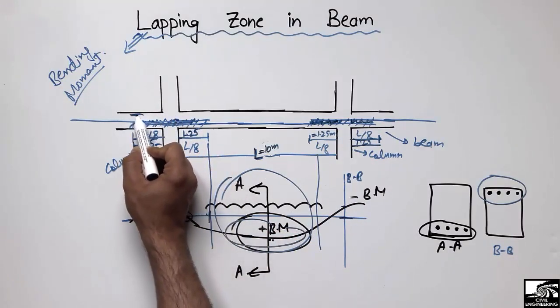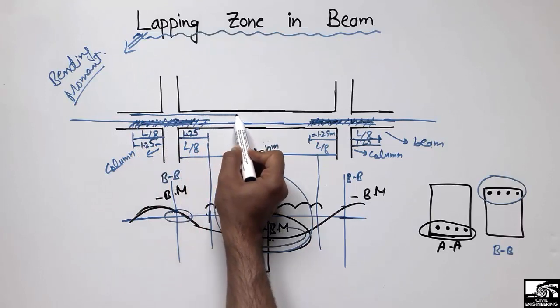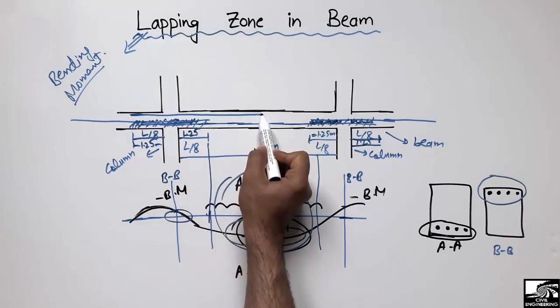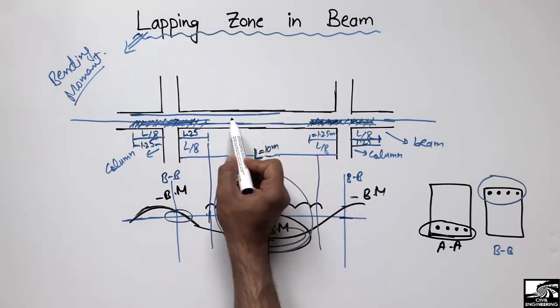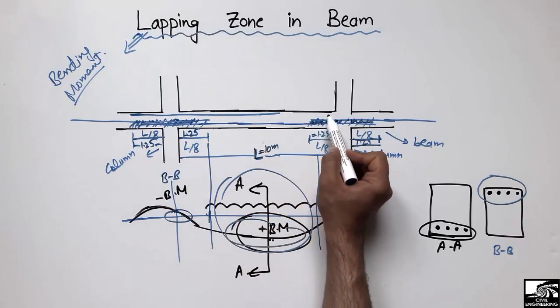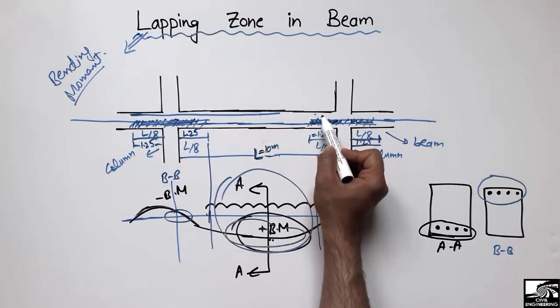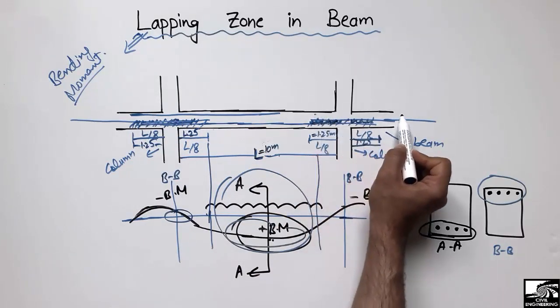For the negative bending moment, the bar should come from this side, but we should not overlap at the support. Similarly, the bar should also come from the other side, but we should not overlap here at the negative top section.